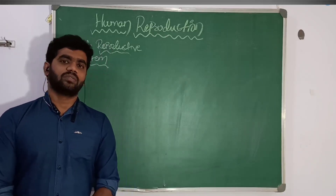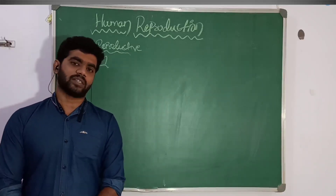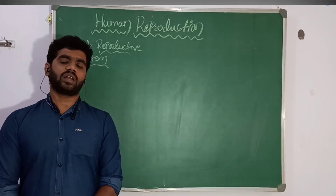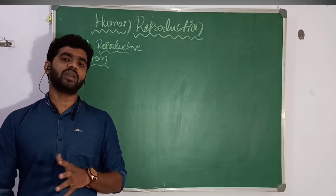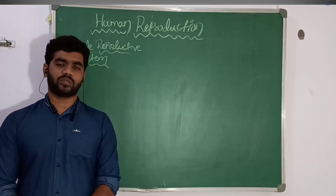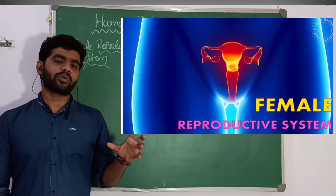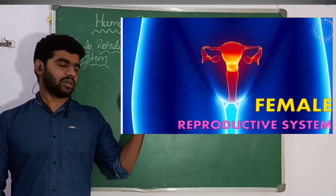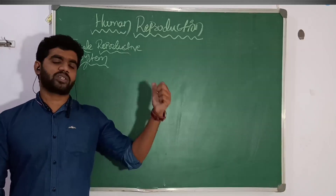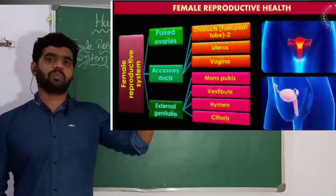Hi students, welcome to another video from Avin's Biology. In today's class we are going to discuss about the female reproductive system. In the female reproductive system, the primary sex organs are the ovaries.